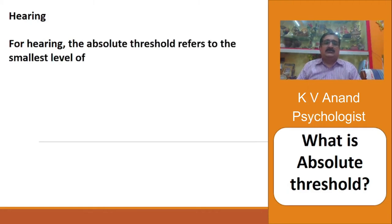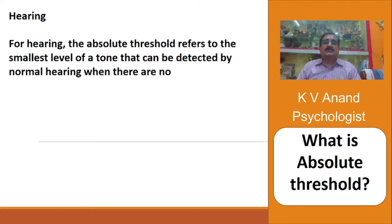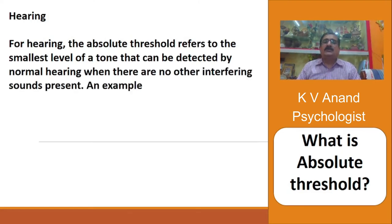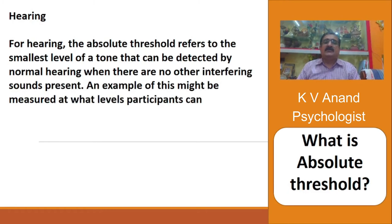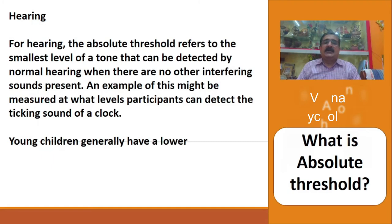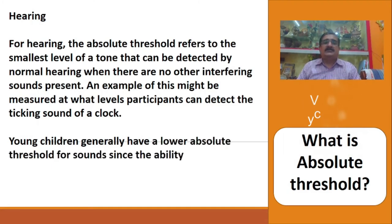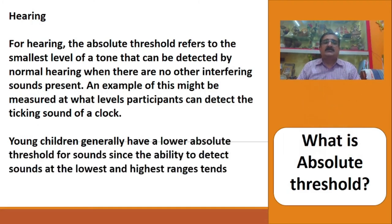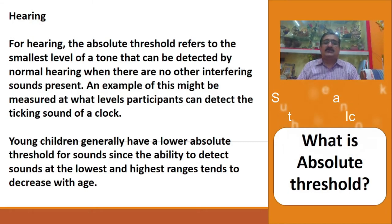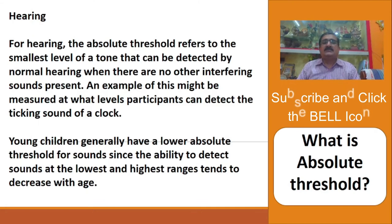In hearing, the absolute threshold refers to the smallest level of a tone that can be detected by normal hearing when there are no other interfering sounds present. An example of this might be measuring at what level participants can detect the ticking sound of a clock. Young children generally have a lower absolute threshold for sounds, since the ability to detect sounds at the lowest and highest ranges tends to decrease with age.